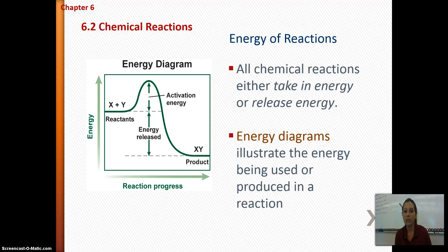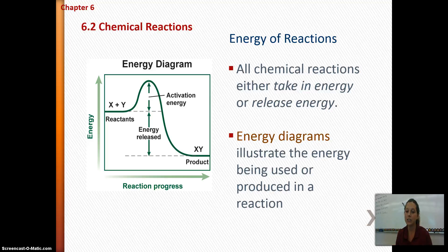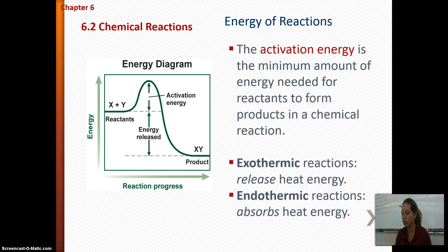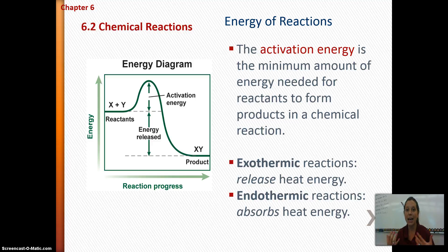We represent reactions with energy diagrams. All chemical reactions either take in energy or release energy. Every reaction has to use a little bit of energy to start — called the activation energy, which is the minimum amount of energy needed for the reaction to form products. If the reaction releases energy, we call it exothermic. An endothermic reaction is where there is an absorption of heat energy coming into the reaction.